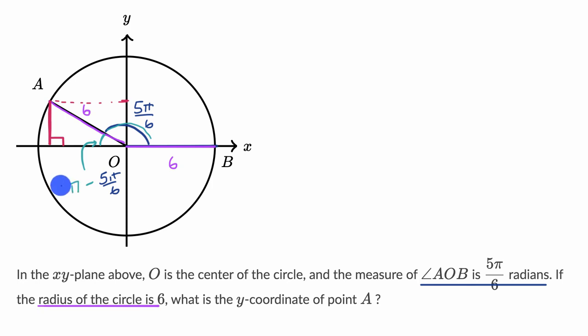Now, pi radians we can rewrite as six pi over six. So when you do the subtraction, you are going to be left with six pi over six minus five pi over six is going to be equal to pi over six radians.